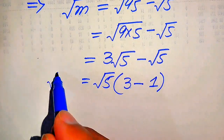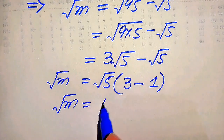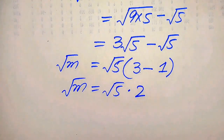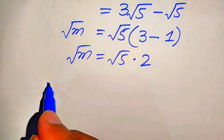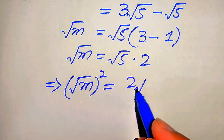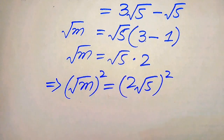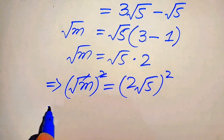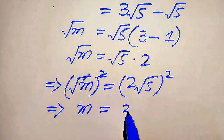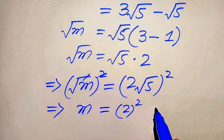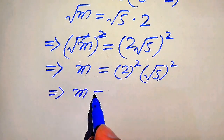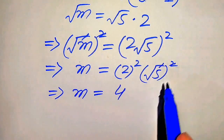So square root of m equals square root of 5 times (3 minus 1), which equals 2√5. Now we are ready to remove the square root sign on both sides. For this we square both sides, and we get m equals 2 squared times (√5) squared.